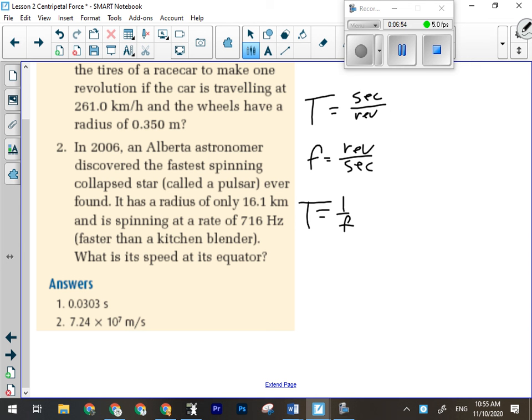Now, in this question here, we're talking about the fastest spinning collapsed star or pulsar. Has a radius of only 16.1 kilometers. Imagine that. This is something that's on the order of hundreds or thousands of times heavier than the sun, squished into something that's only 16.1 kilometers in radius. That means it would fit inside the city of Calgary easily, but weighs hundreds to thousands of times more than the sun. It spins really, really fast.